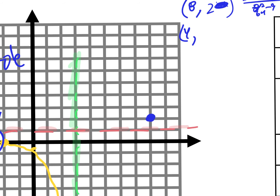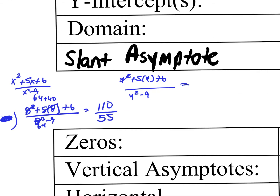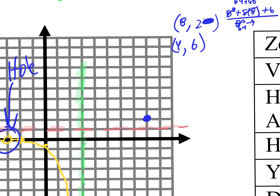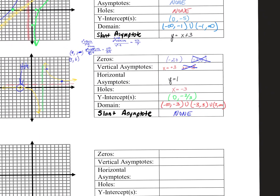Let's plug in 4. Four squared plus 5 times 4 plus 6 over 4 squared minus 9 is 42 over 7, which equals 6. So I go over 4 and up 6. Do you see where this boomerang exists? How does our domain change because of our hole?